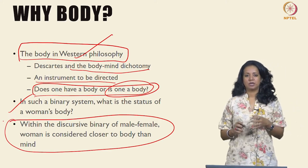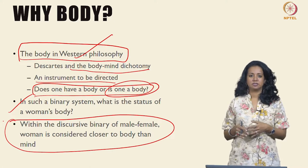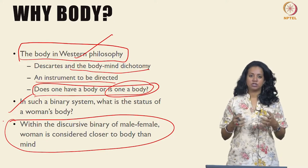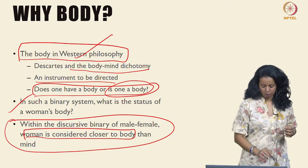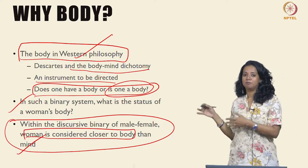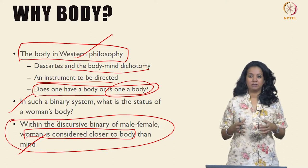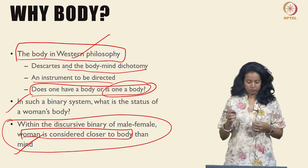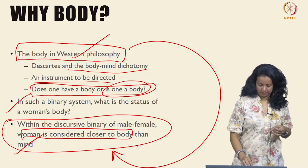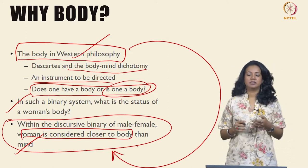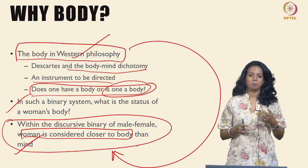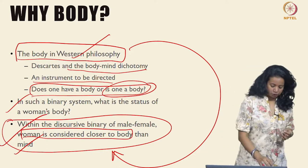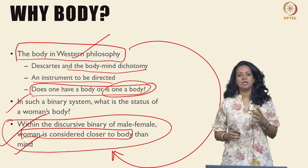Recall the binaries we discussed in relation to discourse analysis and discursive formations of woman, within which man and woman work as a dyad. In such a dyad, woman is considered to be closer to body than mind — the realm of man. Man is always the thinking animal, the one that has conquered nature, whereas women's bodies are considered to be equal to nature. Therefore, it is of paramount importance that feminist theory deal with the question of the body.